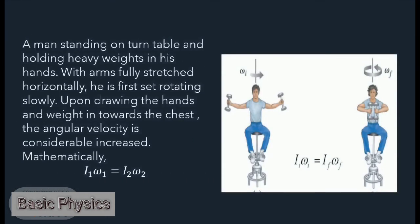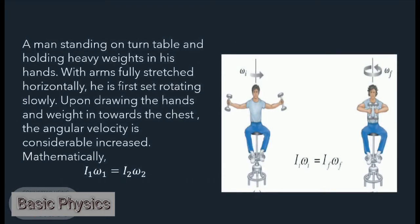Consider a man standing on a turntable, holding heavy weights in his hands with arms fully stretched horizontally. He is first set rotating slowly. Upon drawing his hands and weights in towards his chest, the angular velocity is considerably increased.